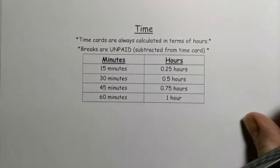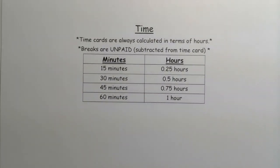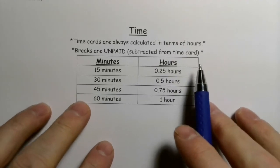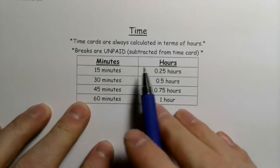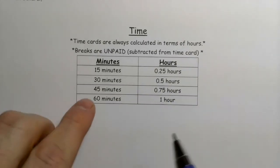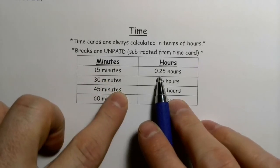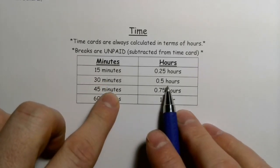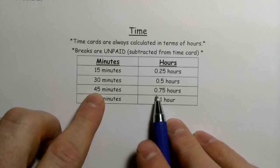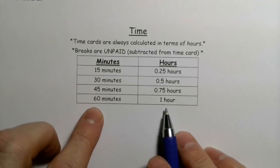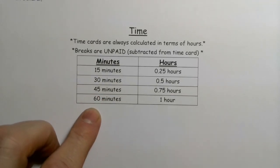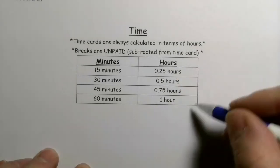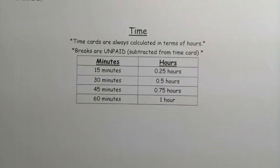Just to reiterate: time cards are always done in terms of hours, and breaks are unpaid — we subtract that time. Remember, 15 minutes is 0.25 of an hour, 30 minutes is 0.5 of an hour, 45 minutes is 0.75 of an hour, and 60 minutes is one hour. Make sure you remember that.